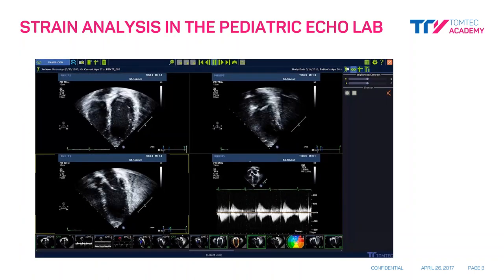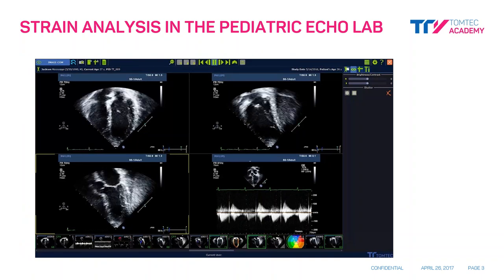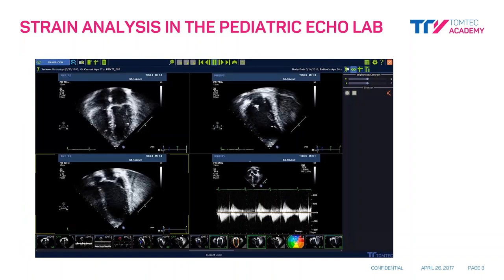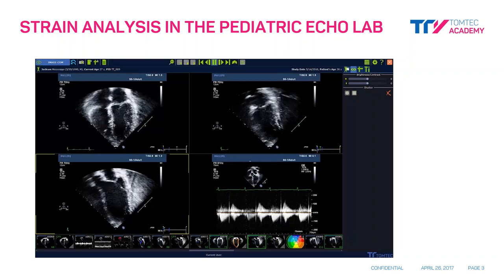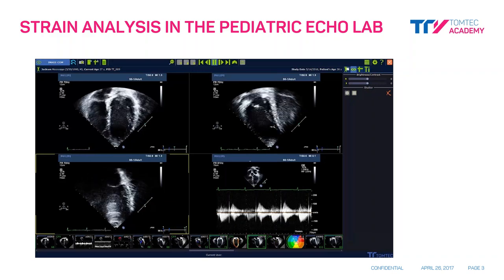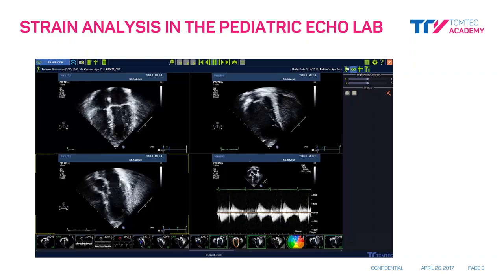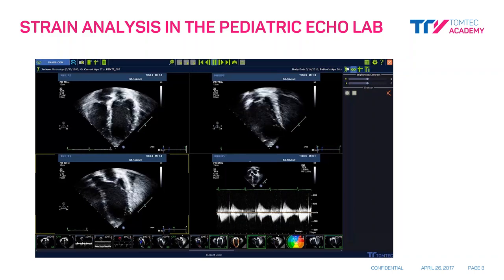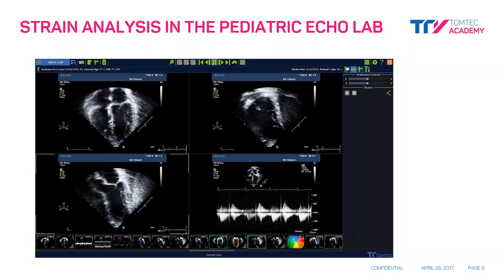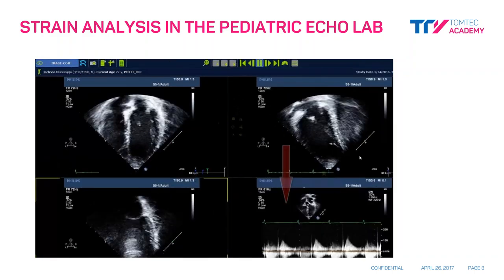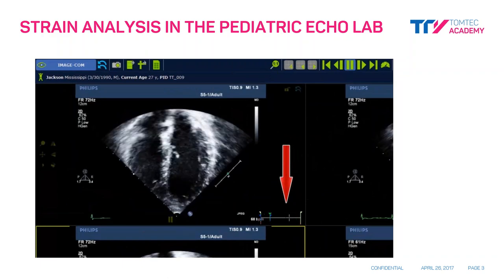Once the desired study has been selected and all three of the apical views, or any view wished to be analyzed, has been pulled into the viewer, the user can begin the analysis. If the user wishes to include the aortic valve closure time, he or she must also select an appropriate spectral analysis clip as well. If multiple cardiac cycles have been acquired, as in most cases, the user will select the desired cycle of choice by referring to the reference markers located just right of the ECG.